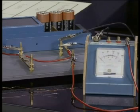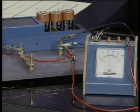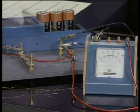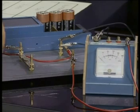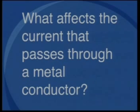Our focus today is going to be on experimental design and analysis of results. Let me show you the apparatus that we will be working with. Here I have a circuit board with three torch cells, some connecting leads, an ammeter, and a thin piece of copper wire which I have already connected into the circuit, some thicker copper wire, and a thin piece of nichrome wire. The task is to find out what affects the current that passes through the metal conductor.